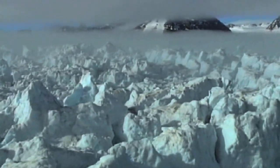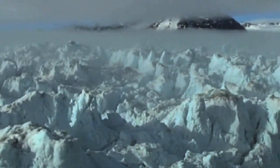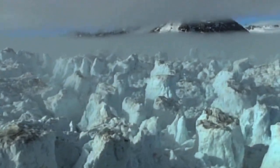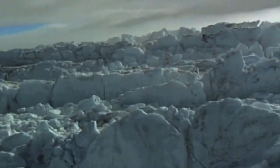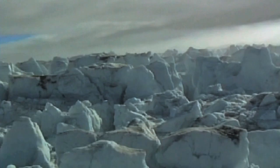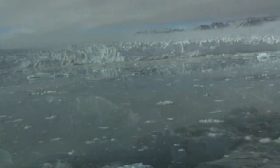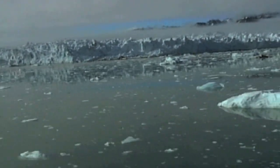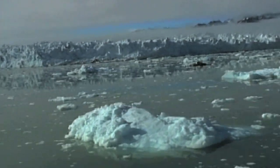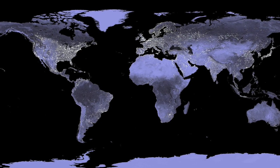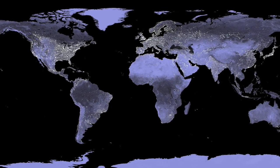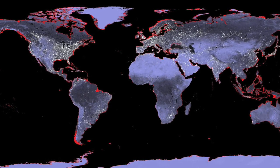Several major ice shelves, thousands of years old, have recently disintegrated. The glaciers on the land behind them, suddenly released, now move more quickly into the sea. Ice moving from land into the ocean causes global sea level to rise. Even a small rise in sea level could have a significant impact on the hundreds of millions of people living in coastal regions near the ocean's edge.